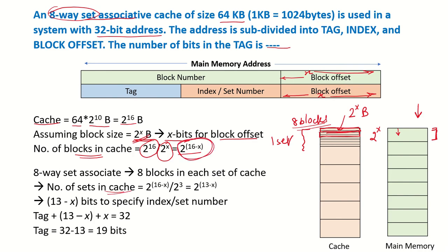The total number of sets in the cache is 2 to the power of 16 minus x, divided by 2 to the power of 3 (since there are 8 blocks per set), which gives 2 to the power of 13 minus x. Therefore, to specify the index or set number, we need 13 minus x bits.